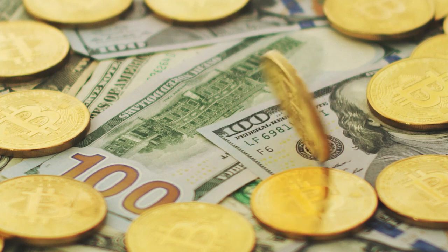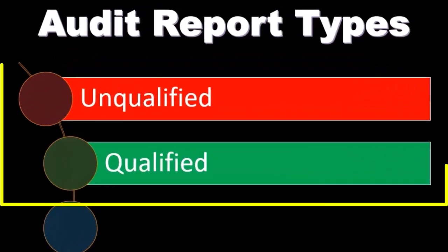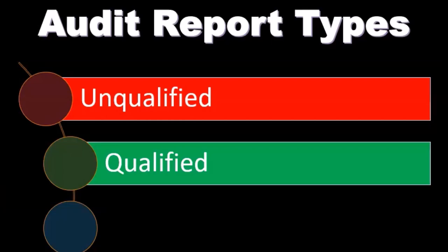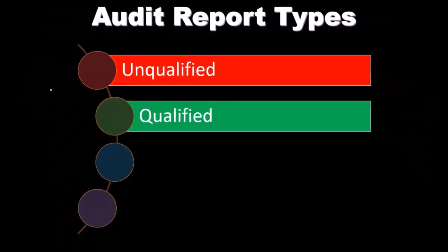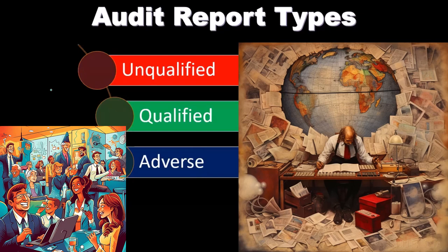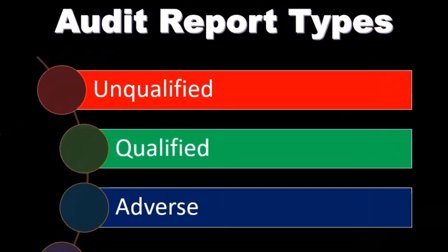Now, what if there is a qualification — a problem? If an auditor finds that financial statements contain a misstatement that is considered material and management refuses to correct it, that creates a qualification. Management may have a reason, such as believing the correction would misrepresent their financial statements, but if we can't issue a clean opinion with this material misstatement in place, we have to put a qualification on the report. We might say it looks good except for this one qualification.